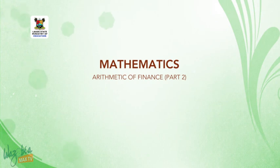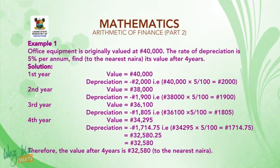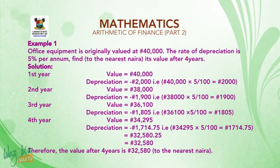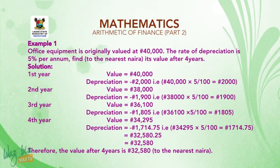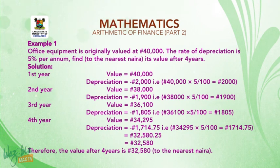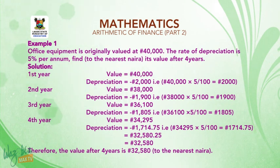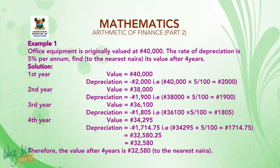Welcome back. Example 1: Office equipment is originally valued at 40,000 Naira. The rate of depreciation is 5% per annum. Find, to the nearest Naira, its value after 4 years. Solution — Year 1 value: 40,000 Naira. Depreciation = 40,000 × 5/100 = 2,000 Naira.